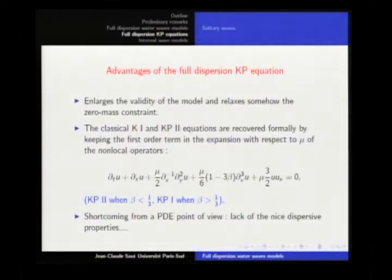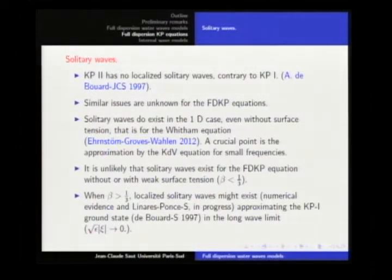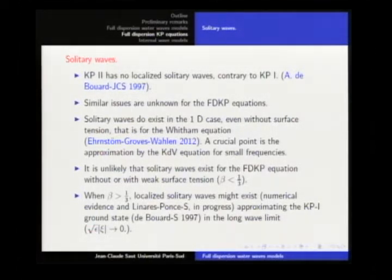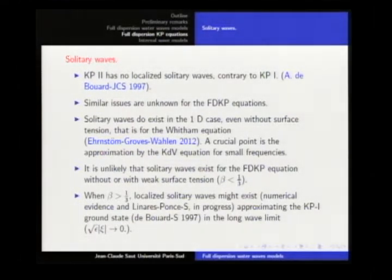KP1 and KP2 are maybe bad models but very nice equations with well-understood mathematical properties. All the nice properties are lost in the full dispersion version. But there is an interesting open problem: KP2 has no solitary waves while KP1 has solitary waves — lump solutions are well known. A similar question for the full dispersion KP system: the program is to show that with strong surface tension you have a lump solution close to the lump of KP1.